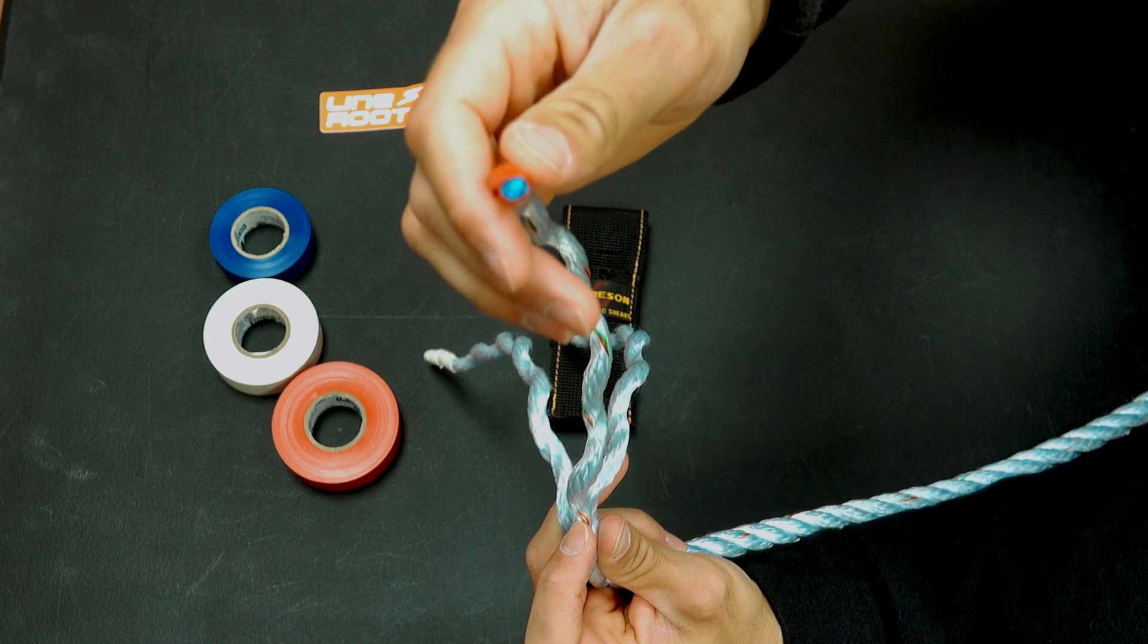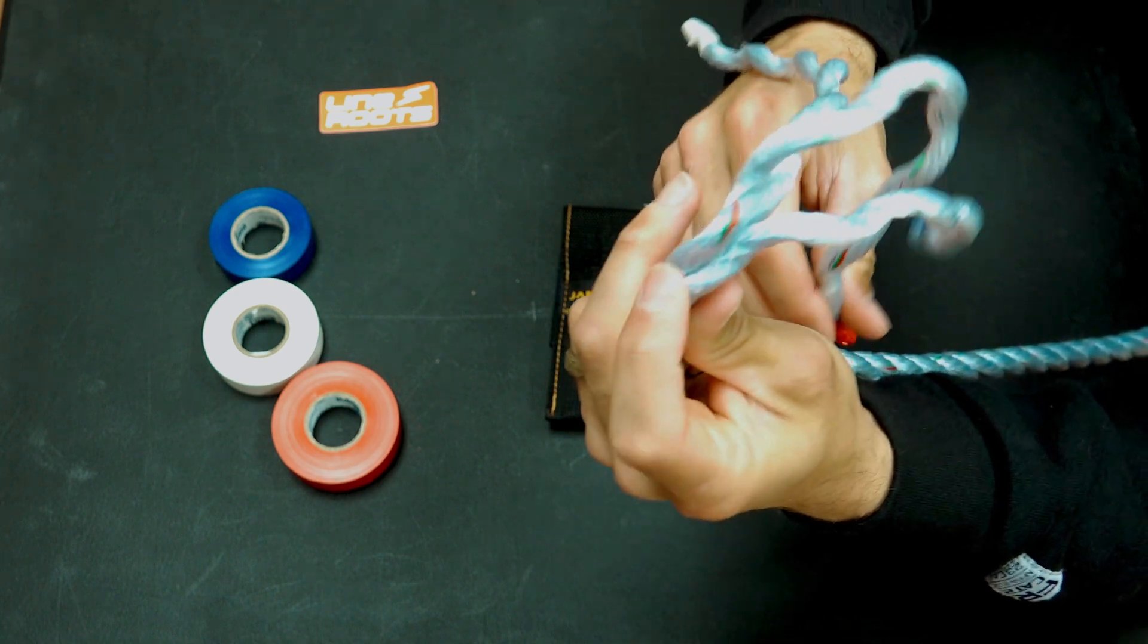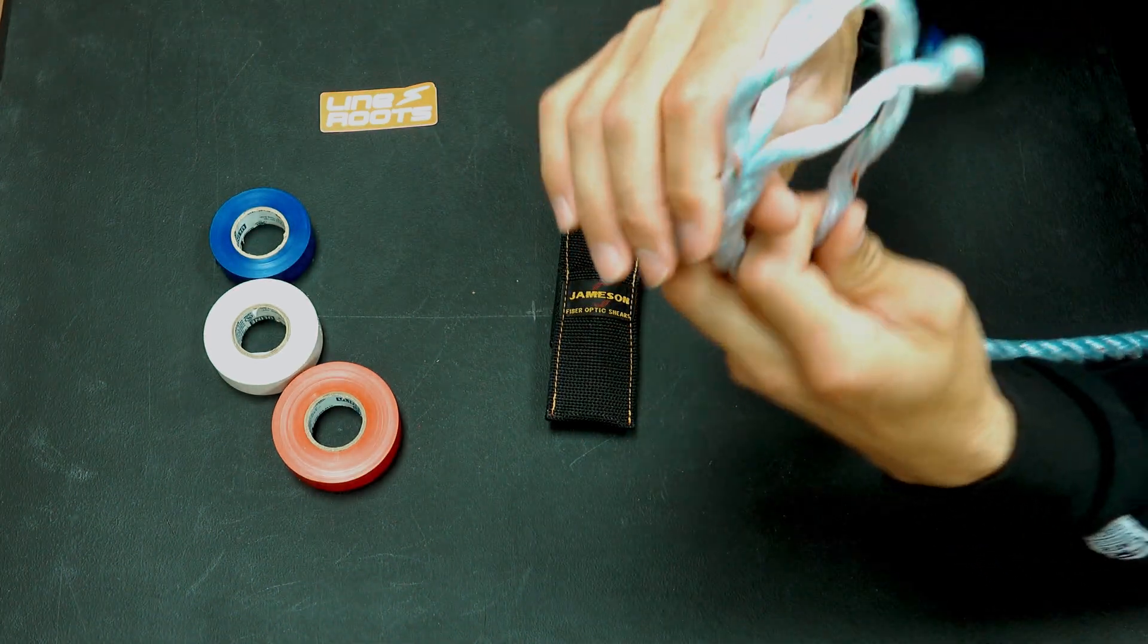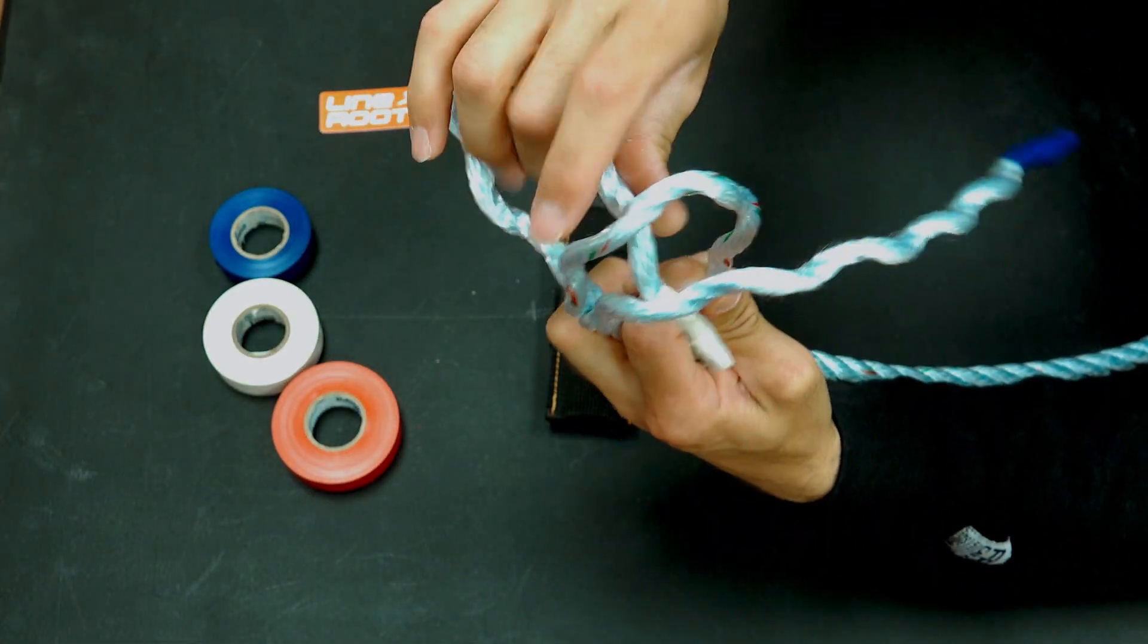My red strand I'm going to bring it directly through the middle and it's the one again sitting right on top. And then I'm going to go over to my white strand and I'm going to go underneath.